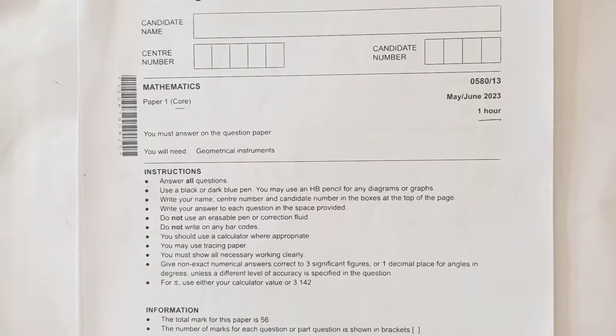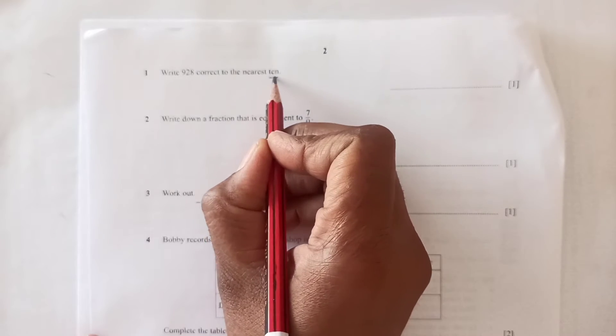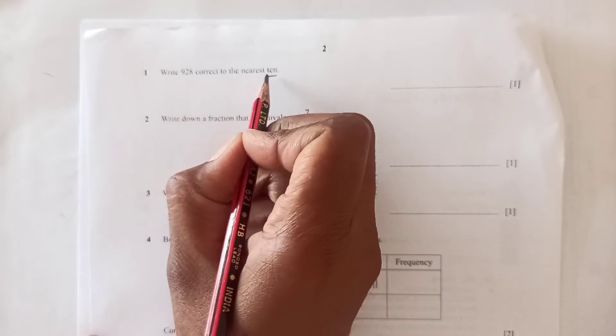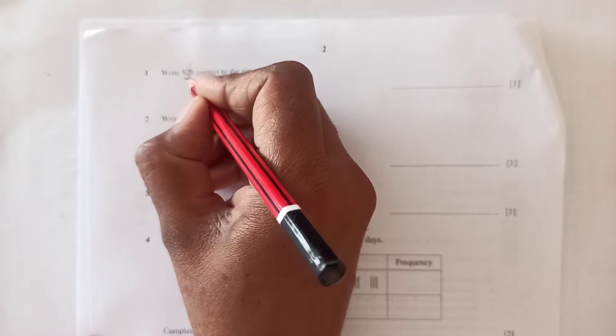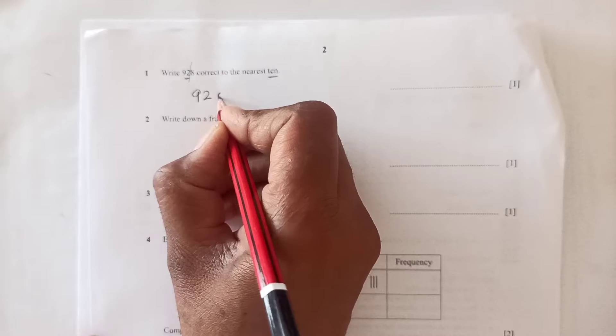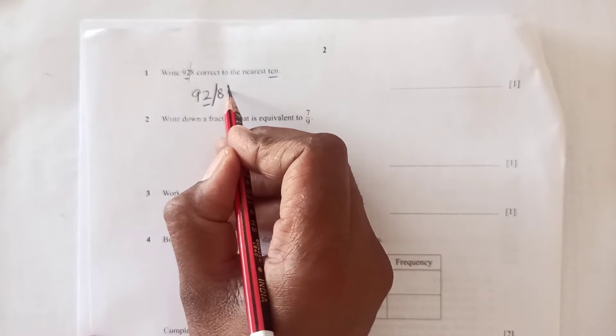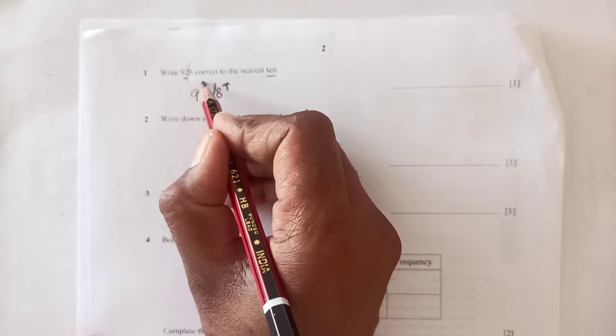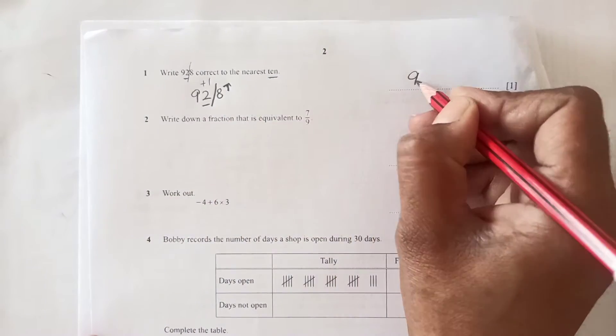So let's start. Question 1: write 928 correct to the nearest 10. First of all, you need to underline the tens place, so this one. Then we look to the right digit. If it is five or more, then we will round it up, so one will be added here. This will become 930.